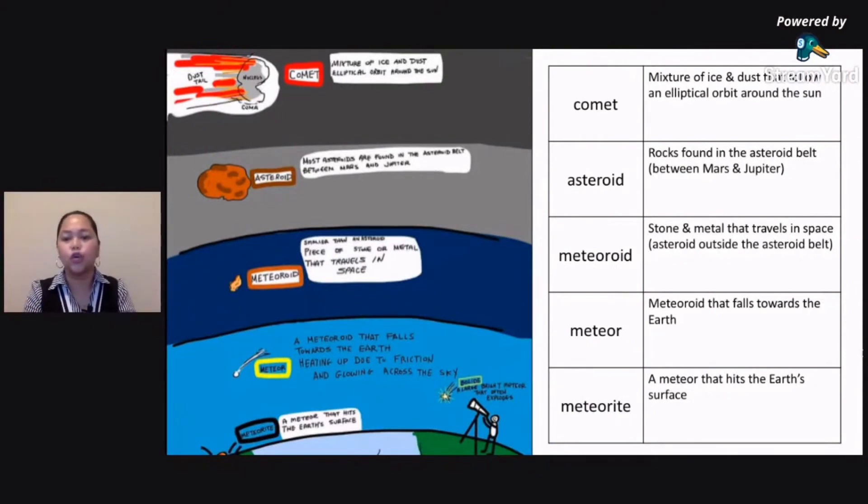And I have also given you the meanings of the terms there. So when you say comet, it is a mixture of ice and dust that follow an elliptical orbit. Pag sinabi mo pong orbit, it is the path that an object travels or follows as it travels around the sun. Pag sinabi mo namang elliptical, this means elongated.